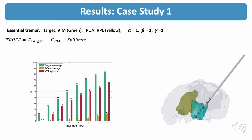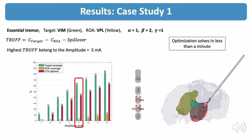We perform a trade-off by measuring different evaluation matrices such as target coverage, RA coverage, and VTA spillover. For this case, the amplitude of 5 mA has the highest trade-off value. Here you can see the results we get for the contact configuration for 5 mA.